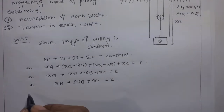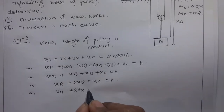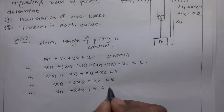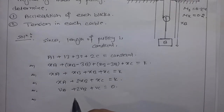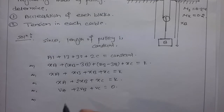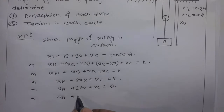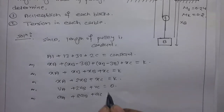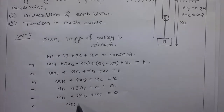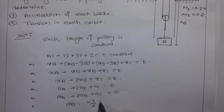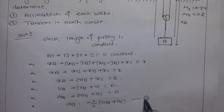Differentiating the position constraint with respect to time gives the velocity relation: VA + 2VB + VC = 0. Differentiating again gives the acceleration constraint: AA + 2AB + AC = 0, or AB = −(1/2)(AA + AC). This is Equation 1.